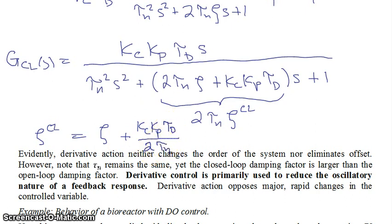All I've done is I've equated this with this, and then solve for zeta closed loop. So what this means is that zeta closed loop is greater than our old zeta.